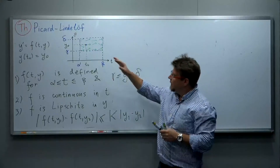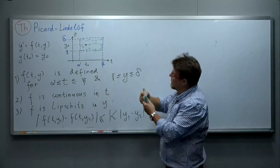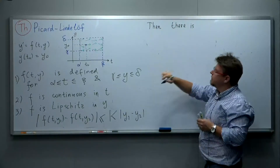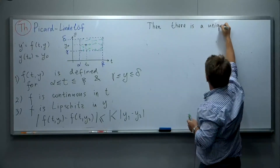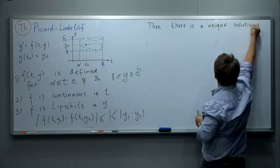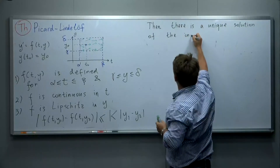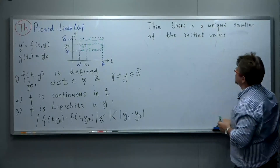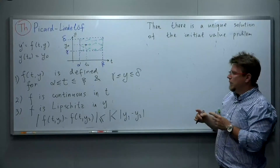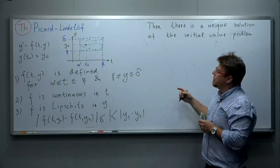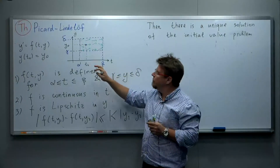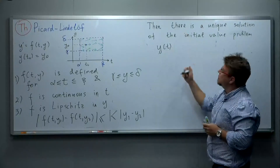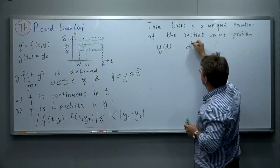Under all these conditions, the conclusion of the Picard-Lindelöf theorem is that there is a unique solution of the initial value problem. The solution y(t) is defined for values of t between some α' and β', where the interval [α', β'] is a subset of the interval [α, β], and the initial value t₀ belongs to this interval.